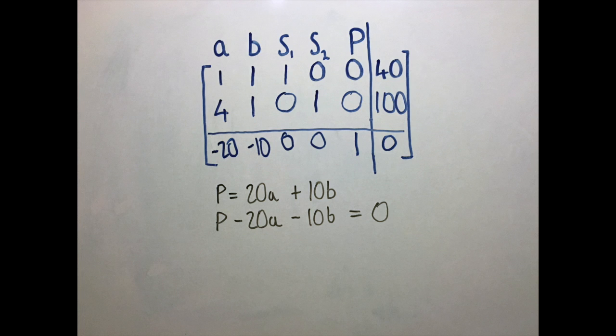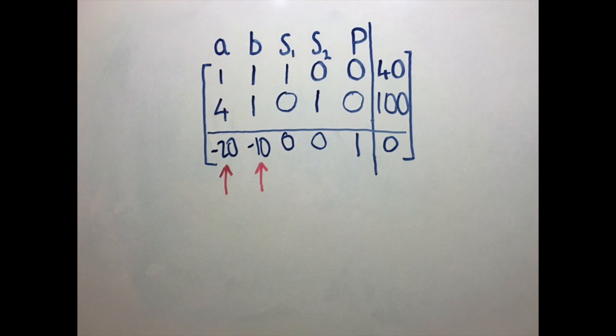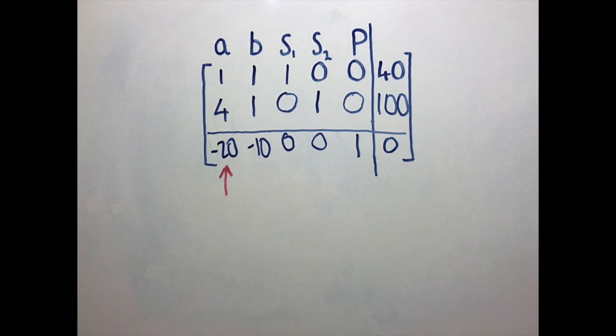We know that we've reached an optimal solution when there are no negative entries in the last row of the table. Here, we have two negative entries. Remember we want to move in the direction where the objective function will increase the quickest. This corresponds to the most negative entry in the last row. We now need to choose what's called a pivot from the column of the most negative entry in the last row.